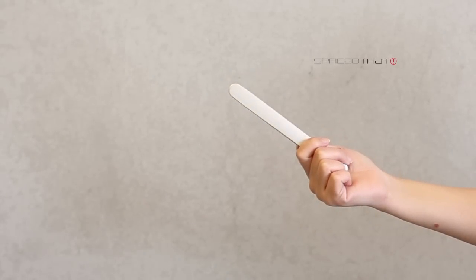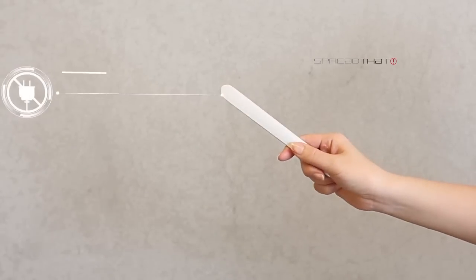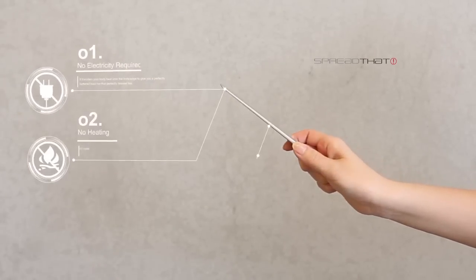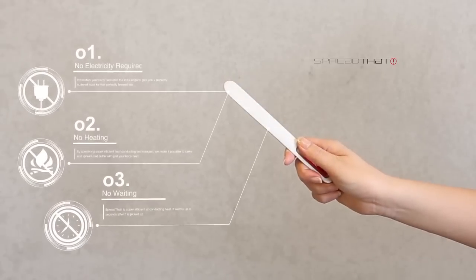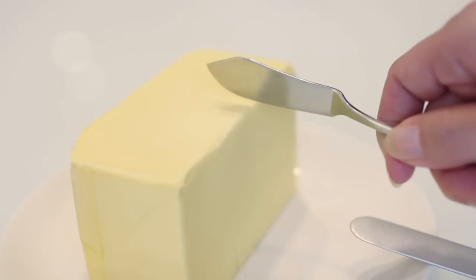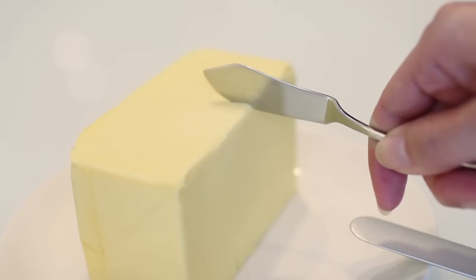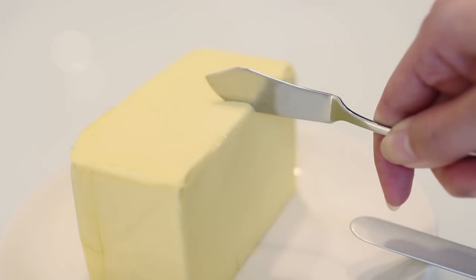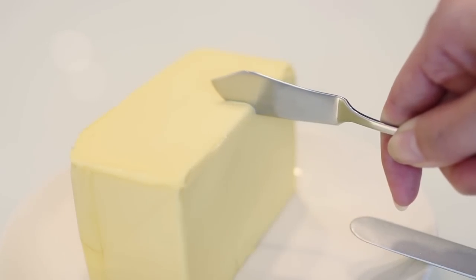Spread That is a unique butter spreader because it uses no electricity, no heating up, and no waiting. Just pick it up and use it. Spread That is made from heat conducting technologies and materials.